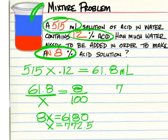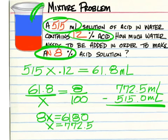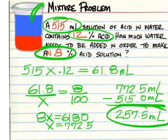Now that is the total contents for the new container. It could still be the same container, you're just adding water to it. But we started with 515 milliliters. So we must subtract that 515 to come up with 257.5 milliliters of water that must be added to make this go from 12% acid to 8% acid.